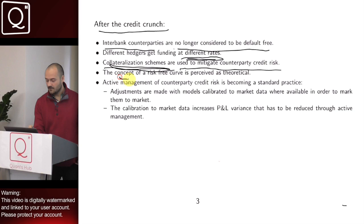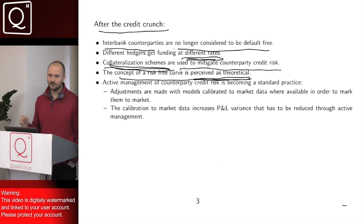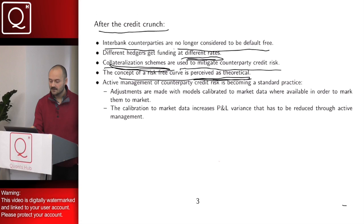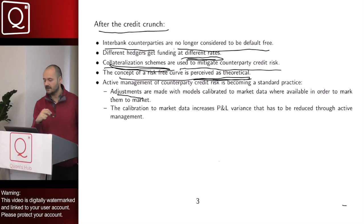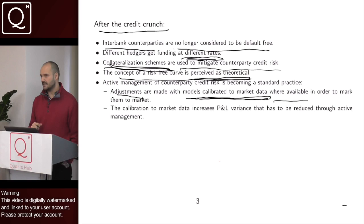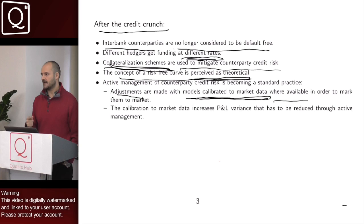This is important: the concept of a risk-free curve is now perceived as theoretical — there is no risk-free curve in the end. Active management of counterparty credit risk is becoming standard practice, with two implications. First, the adjustments made to account for counterparty credit risk are done with models calibrated to market data where available. This is important because in most situations we will be trading with a counterparty for which there is no liquid credit default swap. The exposures used to calculate the adjustment will be generated with risk calibrated to market-implied data — options and so on.